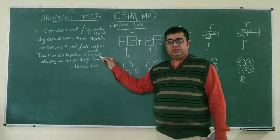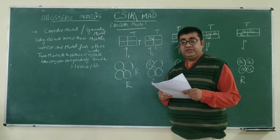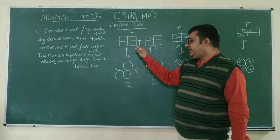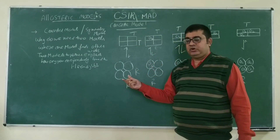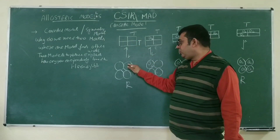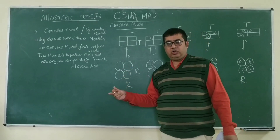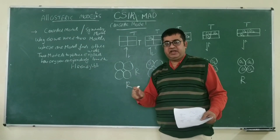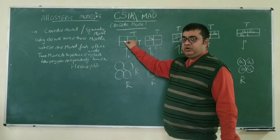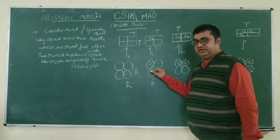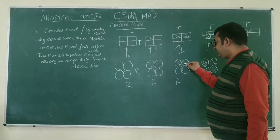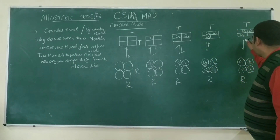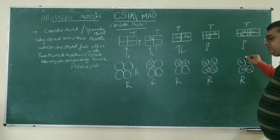Today we will talk in detail about the concerted model. In the concerted model, suppose this is your hemoglobin molecule and there are two forms: one is the tight form (T) and another is the relaxed form (R). When oxygen binds, all the T subunits change into R subunits — all subunits are converted to the same type. For example, in the tight form, when one oxygen binds, all the subunits change into R state. When the second, third, and fourth oxygen bind, all the subunits also change into the relaxed form.